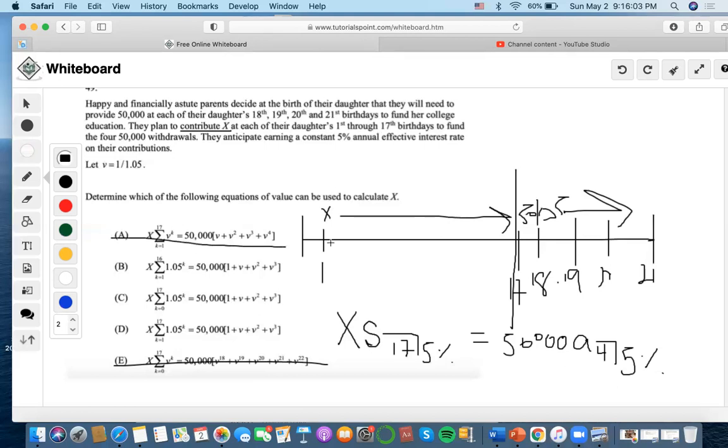Another thing is that there are birthdays 1 to 17, right? So if I were to calculate the amount of payments between that time interval, it would be 17 minus 1, which is 16, plus 1, which is 17 because it's inclusive. So the one with 16 is out because there are 17 payments.